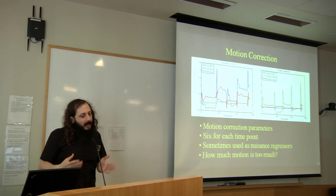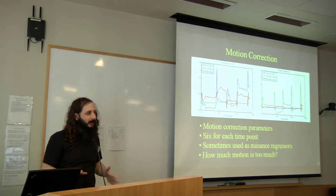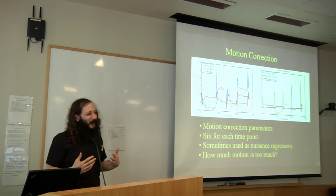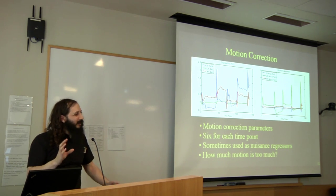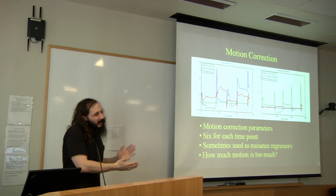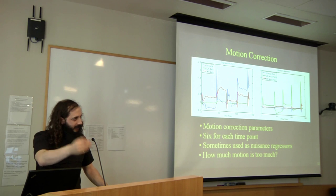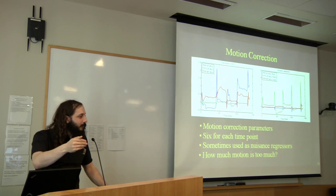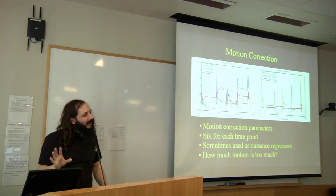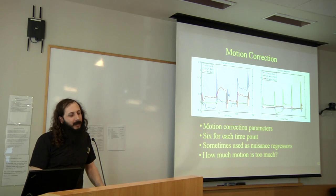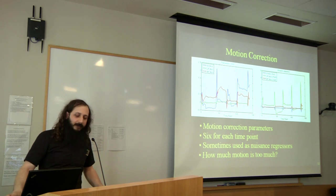One question that comes up a lot is how much motion is too much — how much does your subject have to move in order to throw out the data? You don't want to be analyzing your data, get unexpected results, and then realize the subject was moving a lot and you should have thrown out the data. You want to have criteria set ahead of time, so that if your subject moves too much, you just discard the data. How much is too much really depends on your voxel size, the acquisition, and the experiment. It's important to set that threshold upfront.